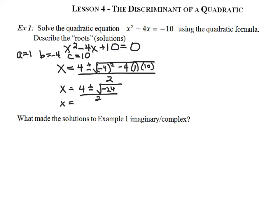I have a negative number underneath my radical, so that tells me my roots are going to have an i in them. So I'm going to get 4 plus or minus — now 24 can be broken down into 4 times 6, so the square root of 4 is 2. Because I have a negative, I get 2i, and then 6 is still left underneath the radical sign, all over 2. Dividing everything by 2, I get my answer: 2 plus or minus i radical 6.